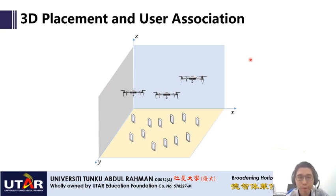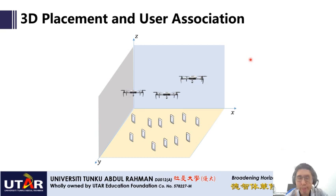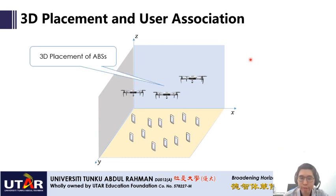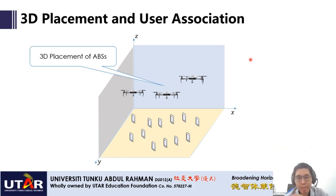For 3D placement and user association in aerial base station networks: given an area, we have multiple aerial base stations hovering in the air and a number of users on the ground. When deploying aerial base stations to provide connectivity to users on the ground, the positions of the aerial base stations must be located at a point where they can provide optimum coverage and optimum signal strength to users. The placement of aerial base stations plays a very important role in providing optimum coverage and connectivity.